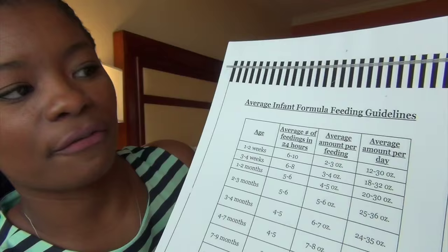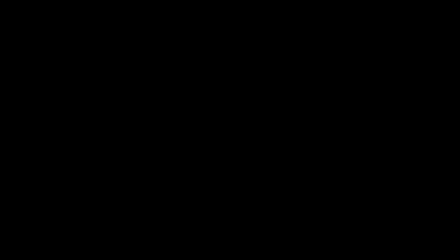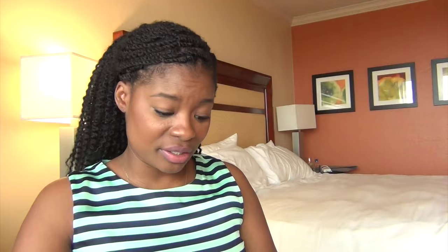I also have the Average Infant Formula Feeding Guideline, which I really like to give to my new moms. And I do keep a copy of the Depo Provera calendar. We give a lot of Depo, and sometimes if the facility is out of their copies, I hate searching for things — it just takes too much time. When I have my own little stash of forms, it makes life so much easier for me.